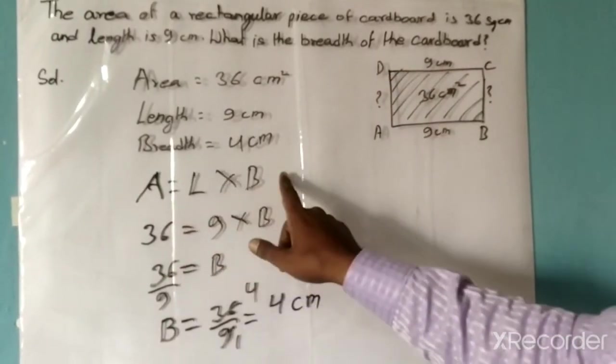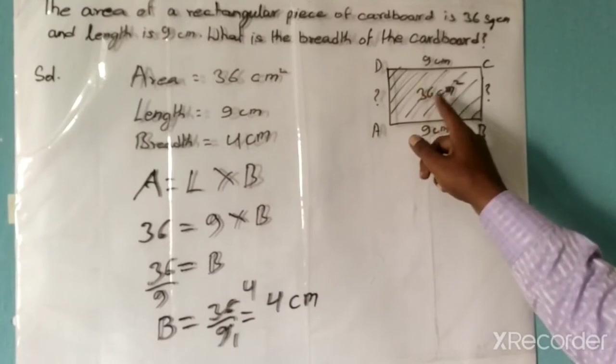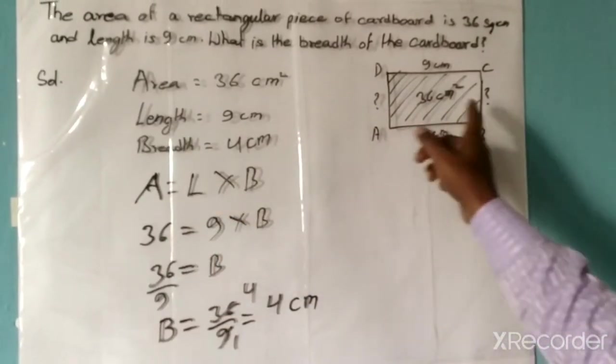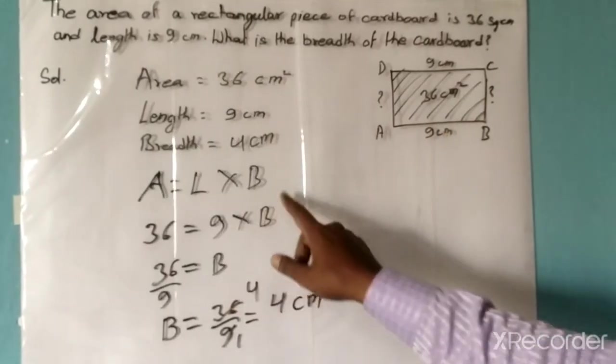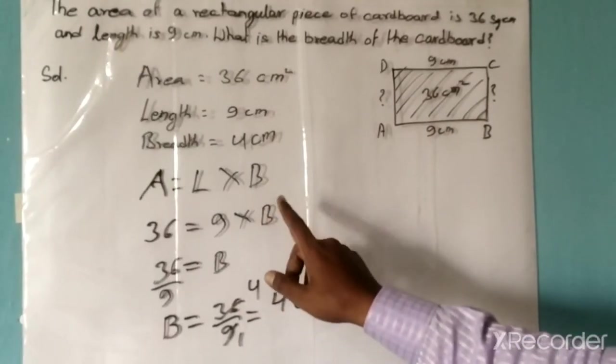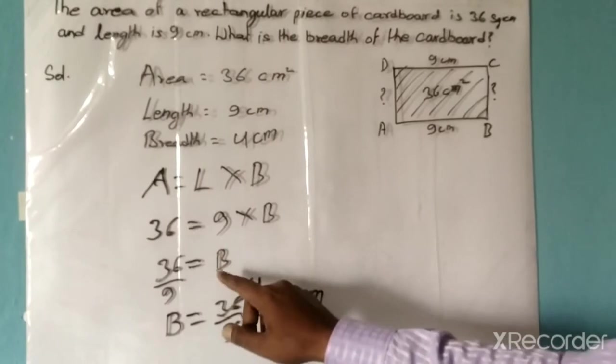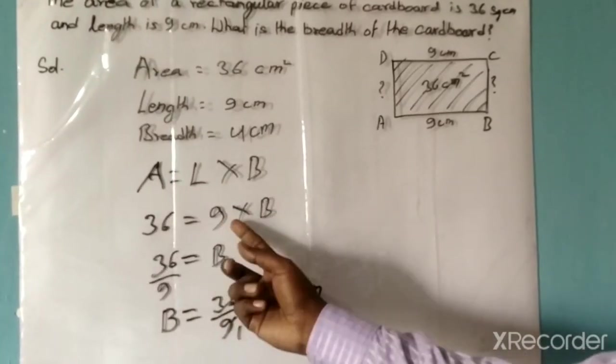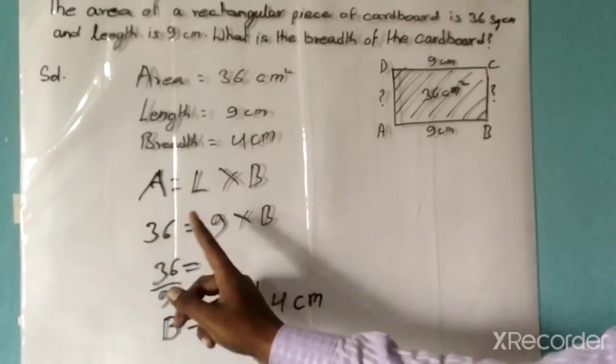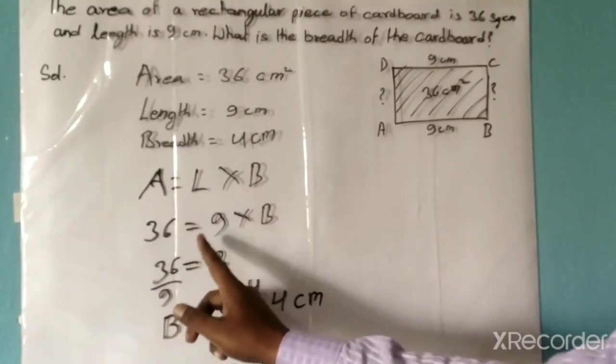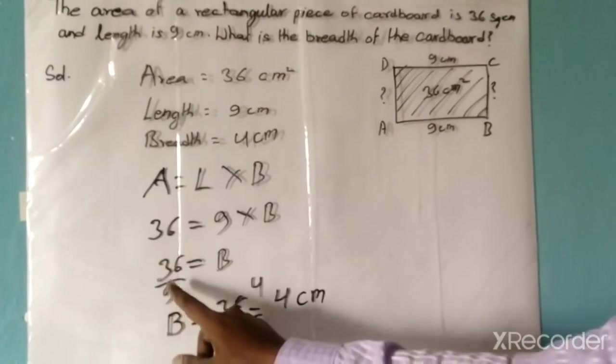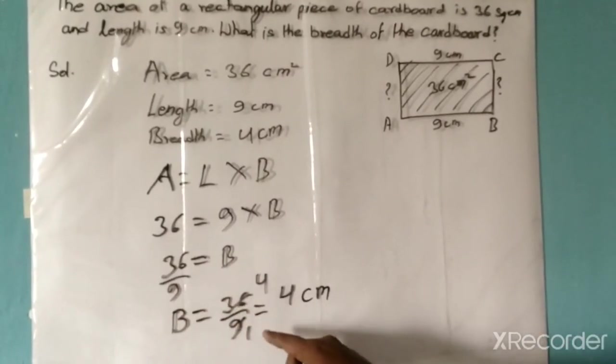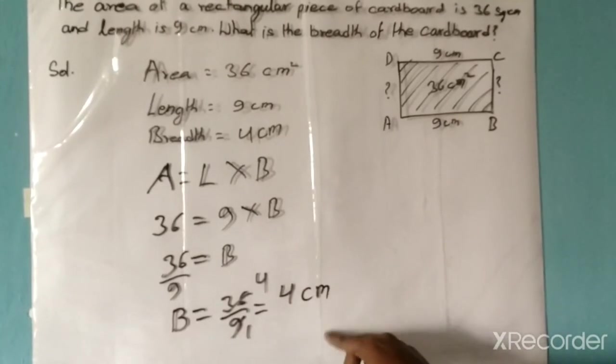Area equals length times breadth. We know that area is 36 square centimeters, so we have written 36. Length is 9 centimeters, so 9. Breadth is unknown, so we keep it as B. When we move this 9 to the other side of the equation, it becomes division.